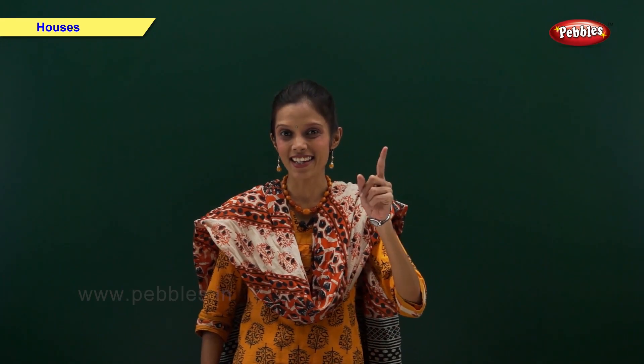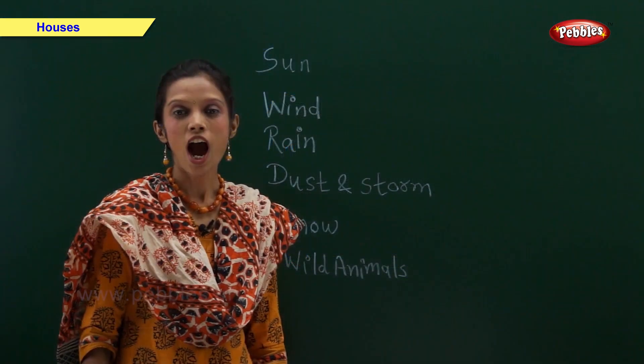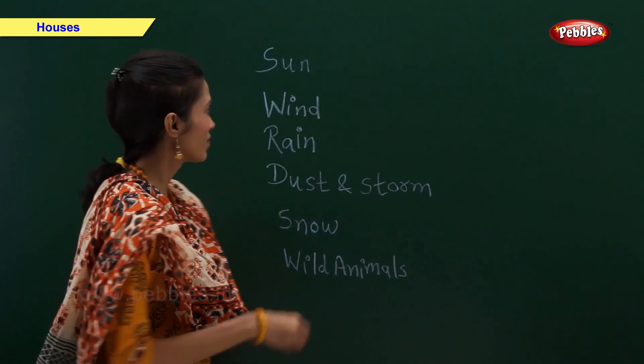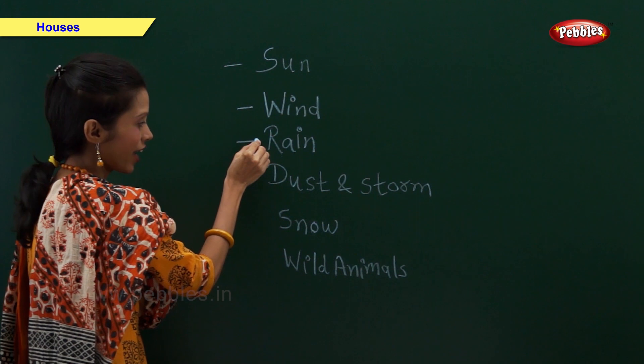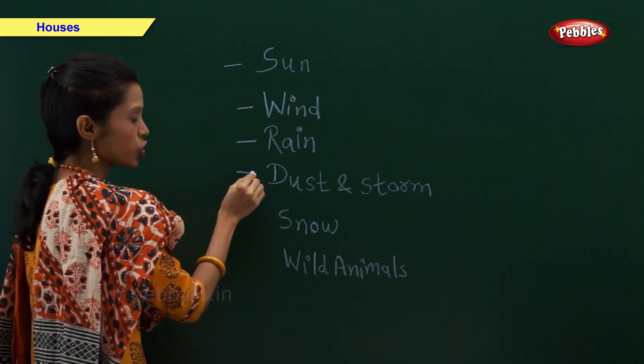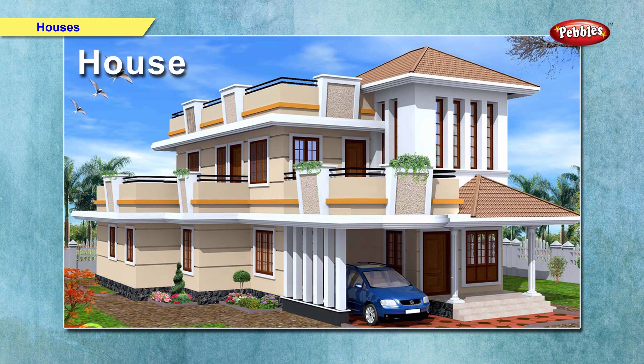Where do we live? Yes, in a house. A house is a place where our family lives happily together. A house keeps us safe from sun, wind, rain, dust and storm, snow, and wild animals. A house provides shelter to the family and protects it from thieves and enemies. We feel safe inside our house.